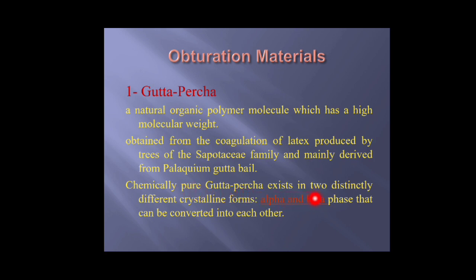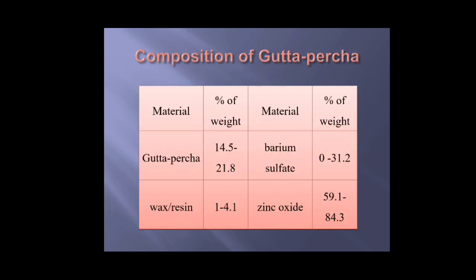Gutta-percha is chemically found in two phases: alpha and beta phase. The composition of gutta-percha includes several additives used to give specific properties to the natural material — such as zinc oxide, which gives consistency; barium sulfate for radio-opacity; and wax, which is added to give sensitivity to heat.